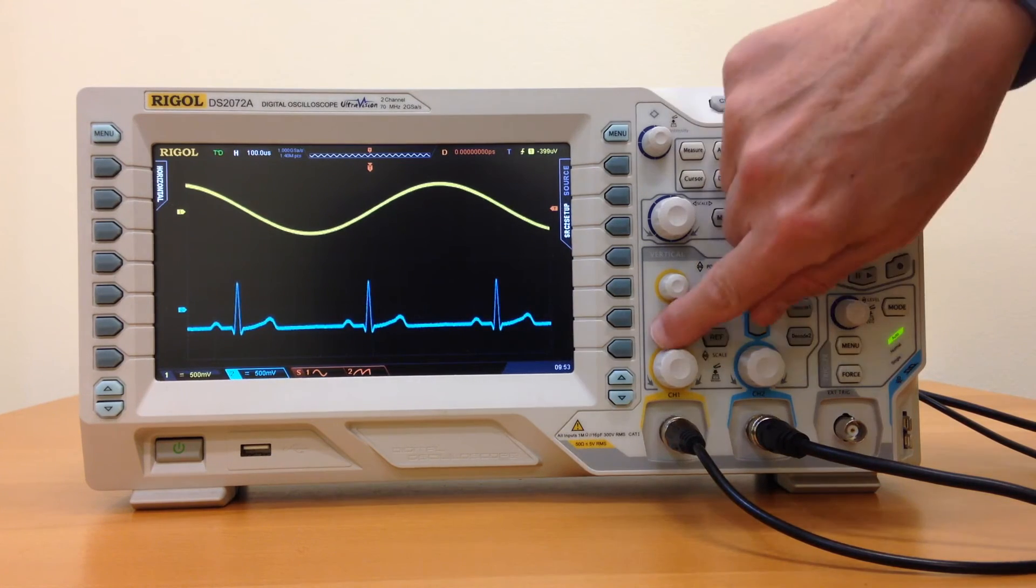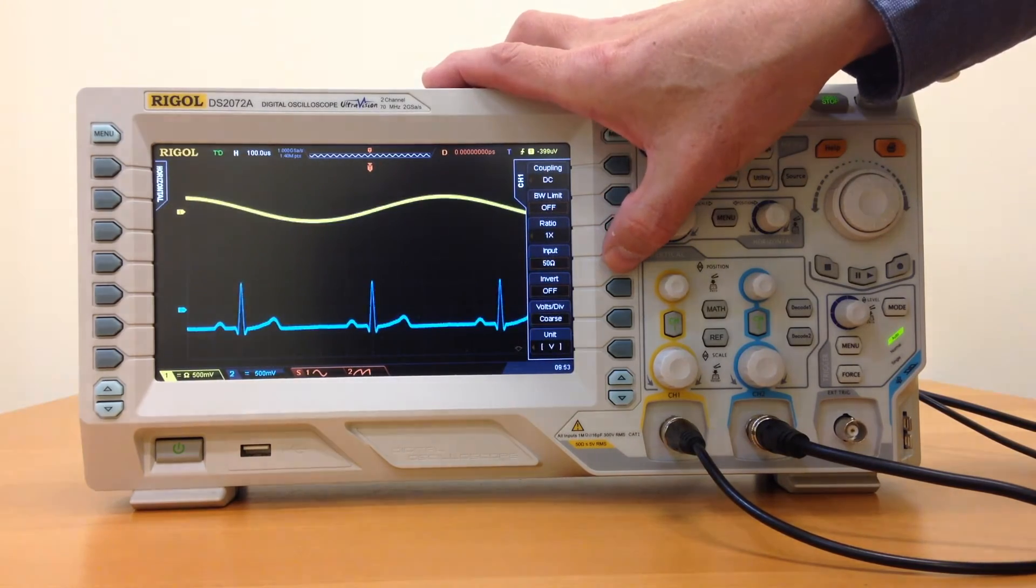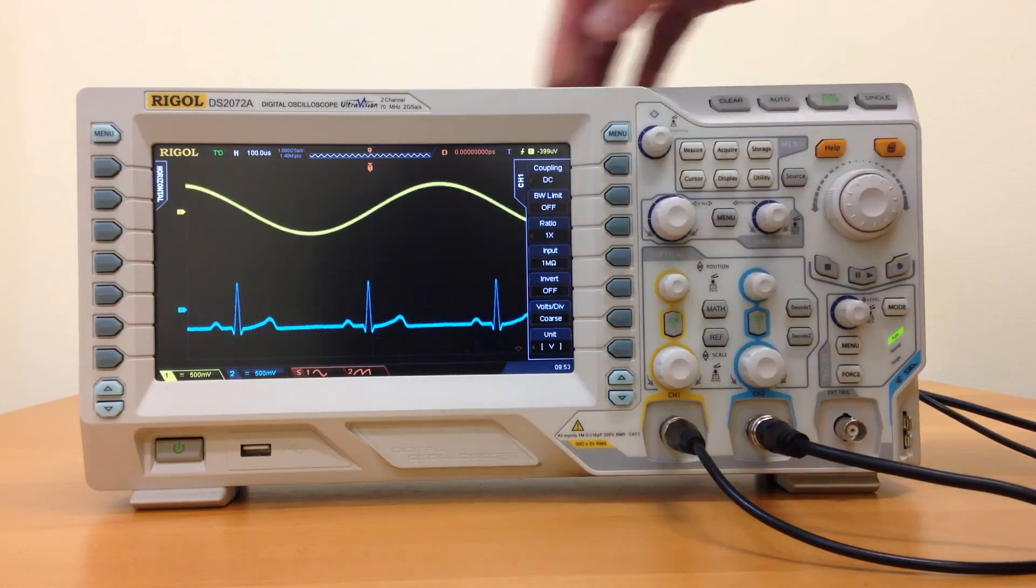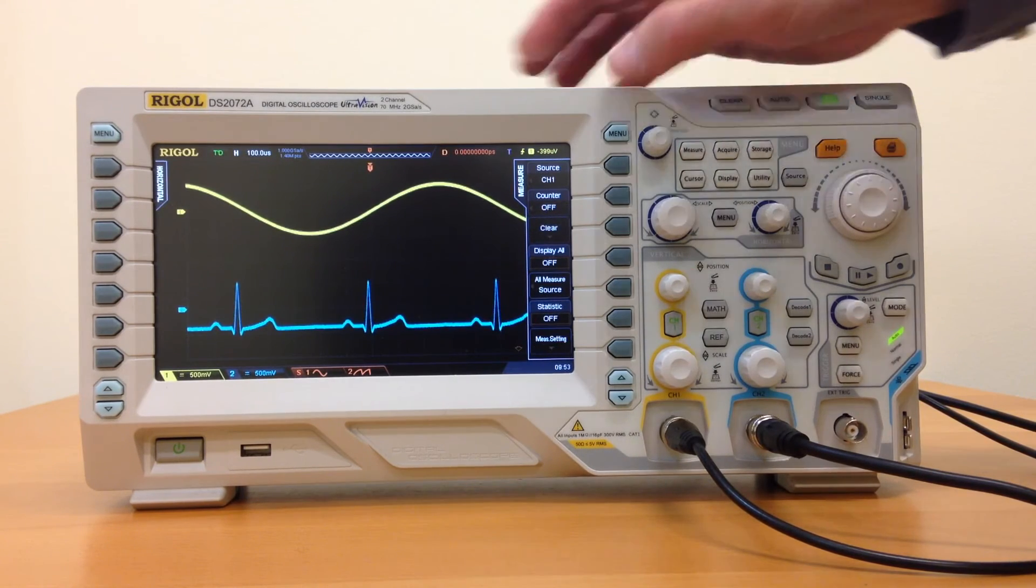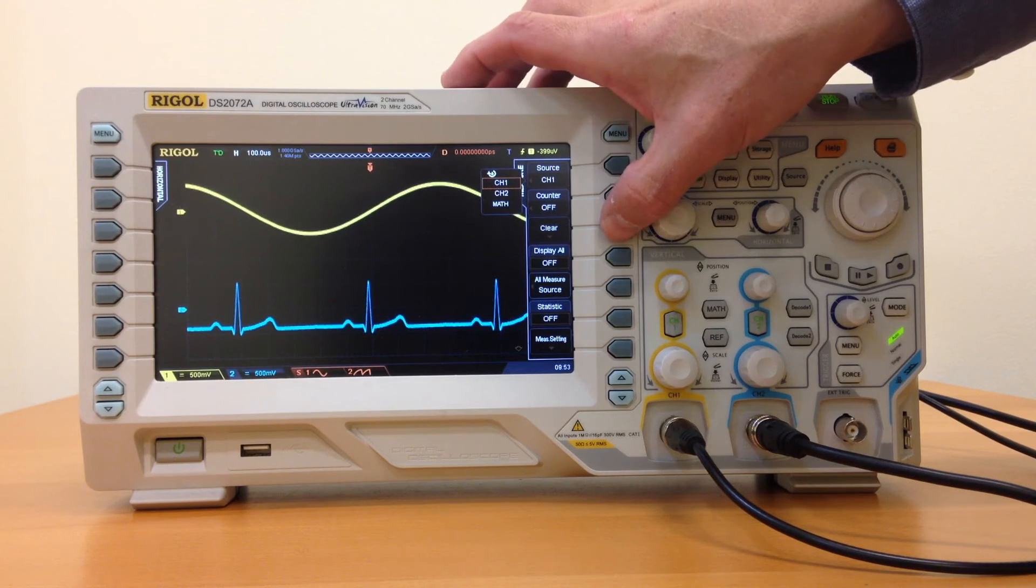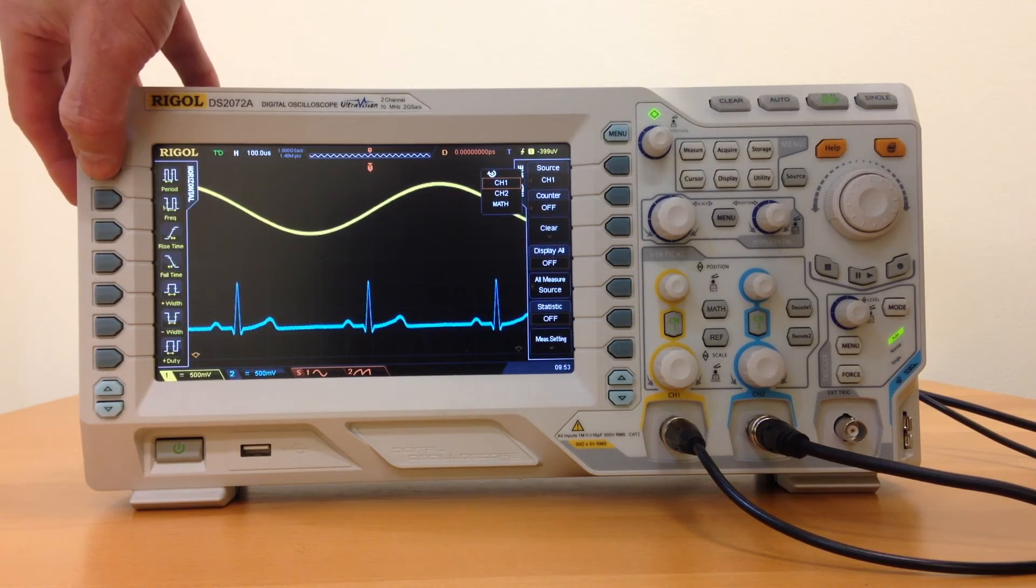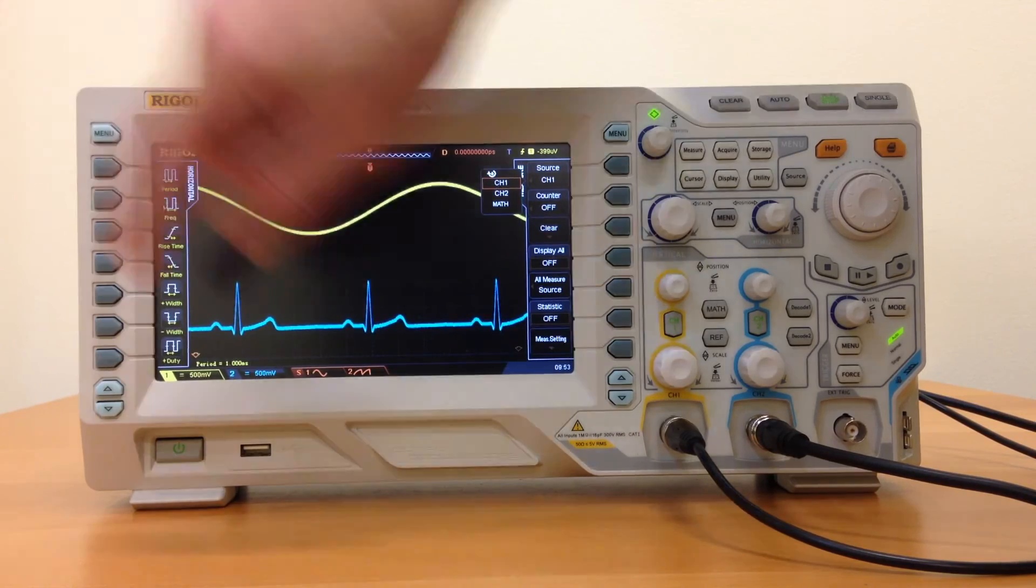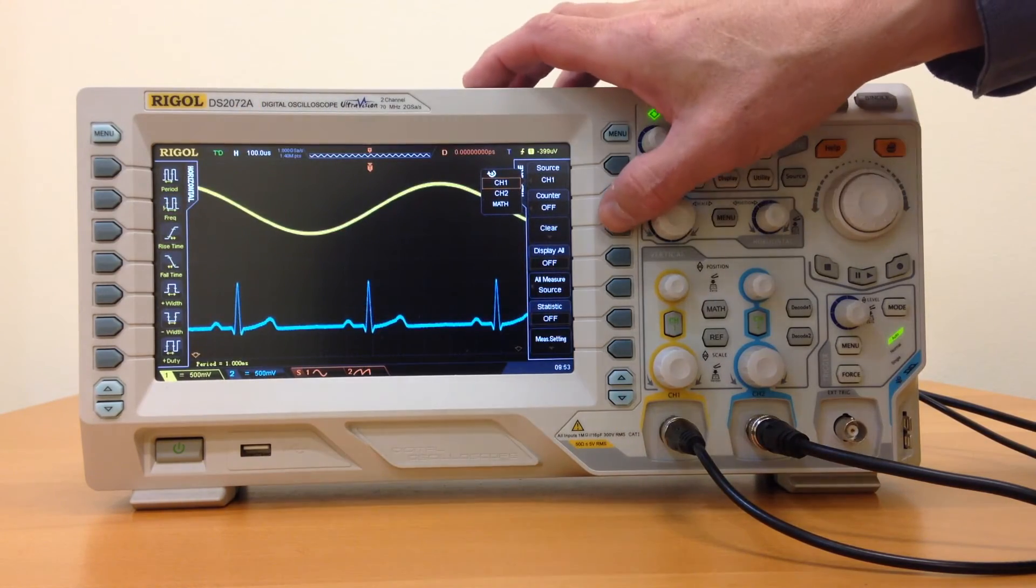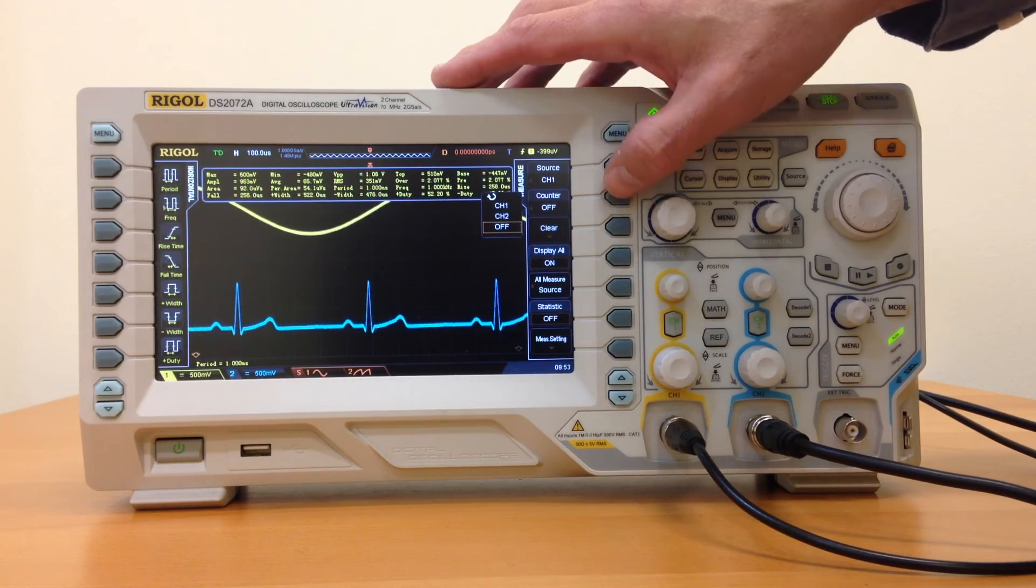Other features of DS2000 oscilloscopes include a 50 ohm front end switchable between 1 mega ohm and 50 ohm. A variety of automated measurements with dedicated control for horizontal and vertical measurements, as well as displaying all measurements on simultaneously, and a hardware-based frequency counter.